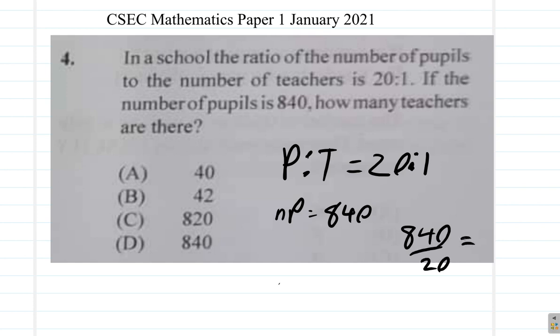That would give you: cancel the zero, zero. Two into eight is four. Two into four is two. That gives you 42.